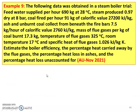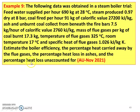Example 9 from the November 2021 question paper: The following data were obtained in a steam boiler trial — feed water supplied per hour: 690 kg at 28°C; steam produced: 0.97 dry at 8 bar; coal fired per hour: 91 kg with calorific value 27,200 kJ/kg. Ash and unburnt coal collected from beneath the fire bars: 7.5 kg/hr with calorific value 2760 kJ/kg. Mass of flue gases per kg of coal burnt: 17.3 kg; flue gas temperature: 325°C; room temperature: 17°C; specific heat of flue gases: 1.026 kJ/kg·K. Estimate the boiler efficiency, percentage of heat carried away by flue gases, percentage of heat loss in ashes, and percentage of heat unaccounted for.